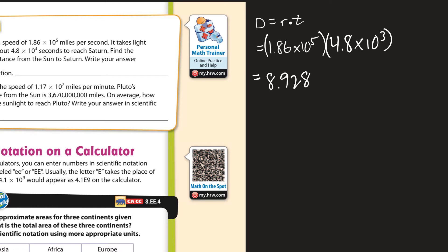So 1.86 times 4.8 is 8.928. And then times 10. And when you're multiplying exponents, you add them, or powers, you add the exponents. So 5 plus 3. So that's going to be 8.928 times 10 to the 8th. And that should be our answer that we're looking for right there. Great.